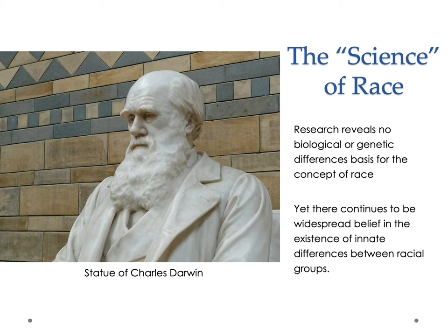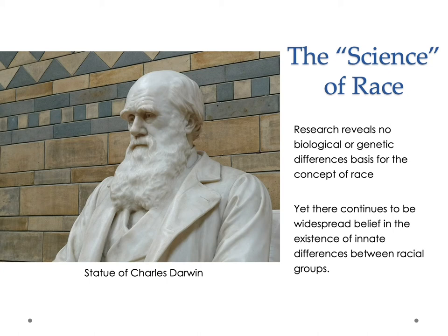Today there continue to be social movements that seek to preserve the purity of whites. We don't need to think about this just in terms of Germany during World War II and the genocidal impulses that led to the Holocaust — the murder of millions of Jews. In the contemporary period, racial purity is very much a part of white power movements that have had a massive resurgence over the last several years. When we get to our lectures on marriage and the family, we'll also see how more and more people are coupling across racial boundaries.